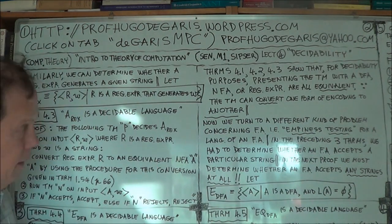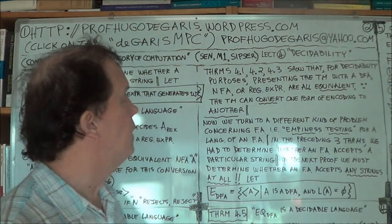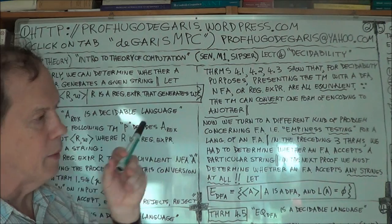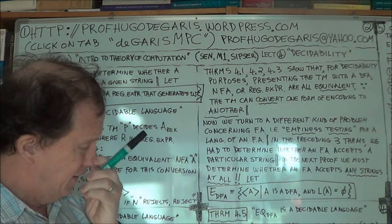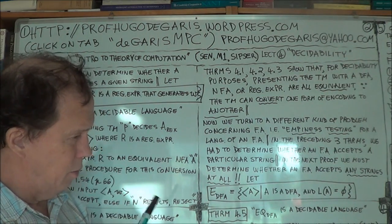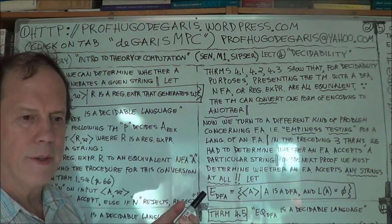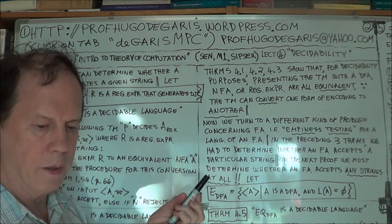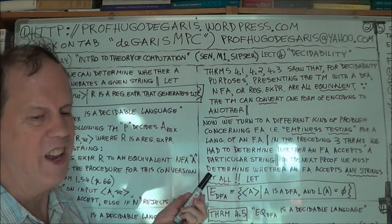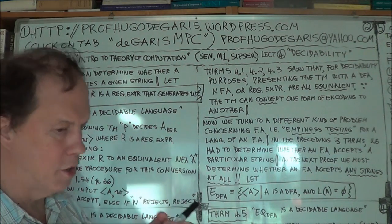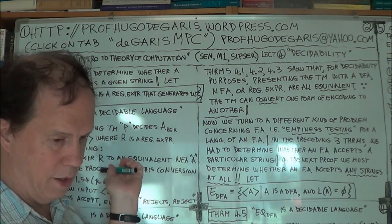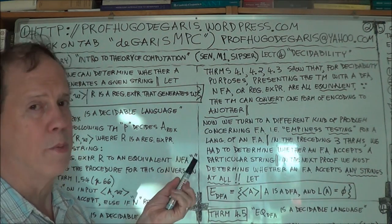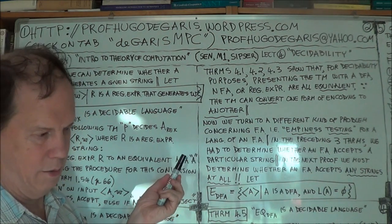Now, we've done three theorems. We've done it for DFAs accepting a particular, arbitrary string, and we've just done it now for regular expressions generating a random string.